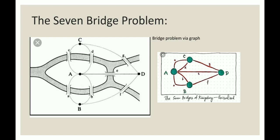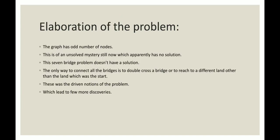So let's see what is the actual problem of the seven bridges. As we all know by the explanation given ahead, it has odd number of nodes. That is A has five nodes, B has three nodes, D has three nodes and B has three nodes.